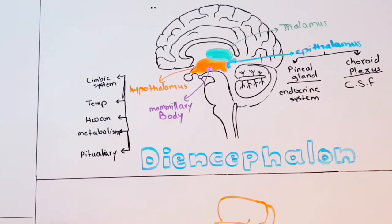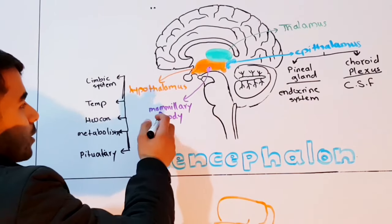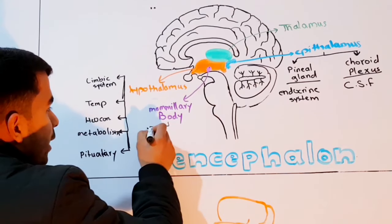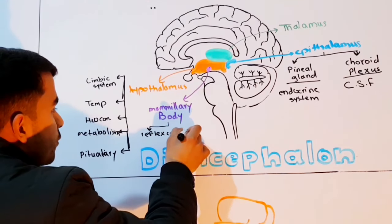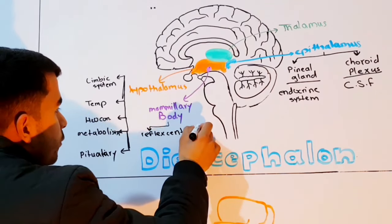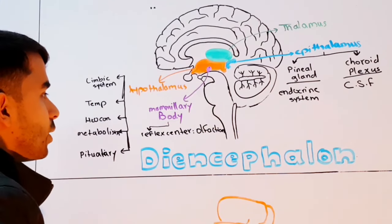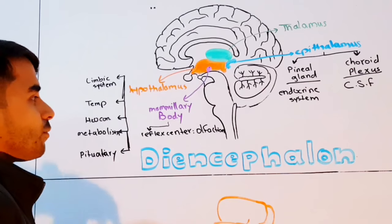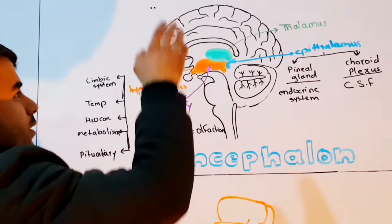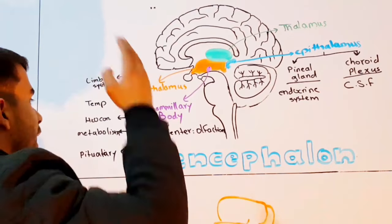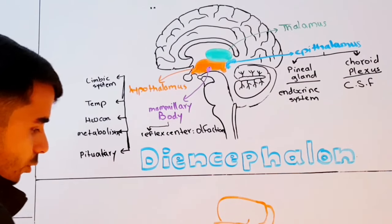The hypothalamus is important for regulation of body temperature, water concentration, and overall metabolism. It also regulates the pituitary gland, giving it access to control a great deal of body function. The mammillary body has reflex centers involved in olfaction — the sense of smell. These are all the structures of the diencephalon: thalamus, epithalamus, hypothalamus, and mammillary body.